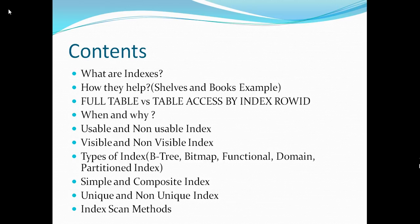With an invisible index, Oracle still maintains the index — any insertion in the table updates the index accordingly. It's just that the index is not used when fetching data, so it still goes ahead and does a full table scan. But if I decide the index was actually helping data retrieval, I make it visible again and the Oracle optimizer immediately starts using it. To recap: usable vs unusable — unusable drops the segment; visible vs invisible — invisible maintains the index but the optimizer doesn't use it.